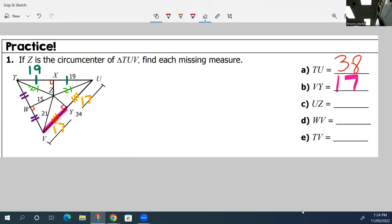U to Z. U to Z is here. We know that that is 21 because we know from any vertice to the circumcenter is congruent from all three vertices.